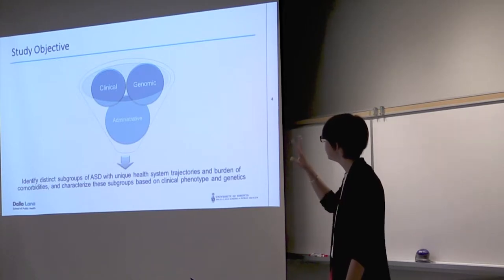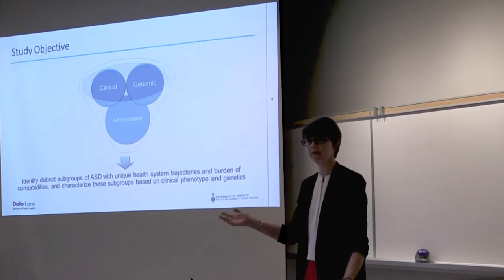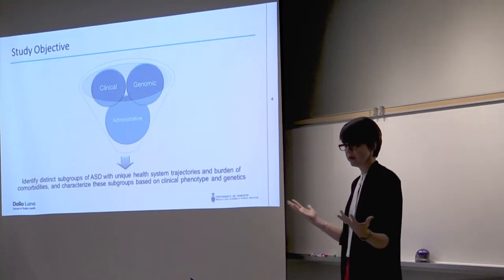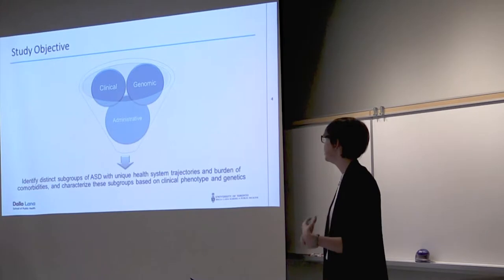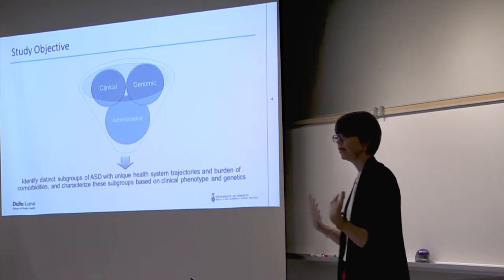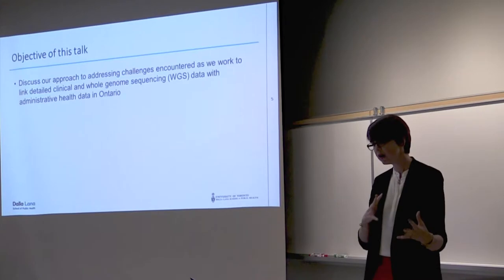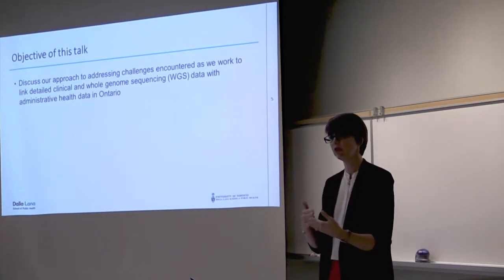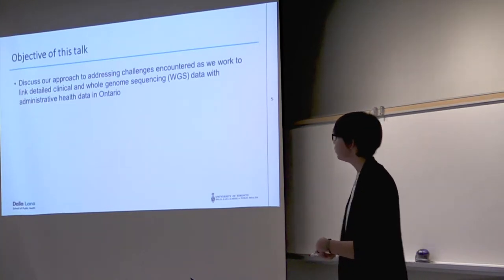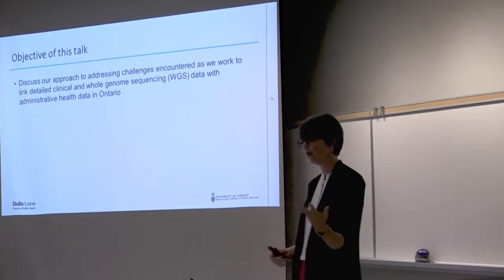The objective of the study was to bring together three different data sources: a clinical dataset, a genomic dataset, and Ontario administrative health data. What we decided to do, building on this idea that we have heterogeneity in phenotype and in the genetic component, was to try to identify distinct subgroups of autism with unique health system trajectories, and then characterize these based on their clinical phenotype and their genetics. The objective of this talk is to discuss our approach to addressing the challenges we've encountered along the way and how we propose to address those that remain.